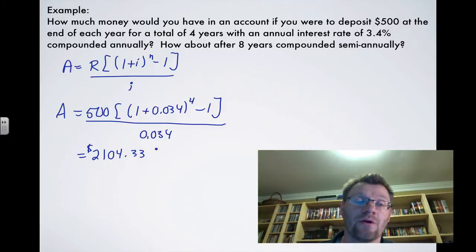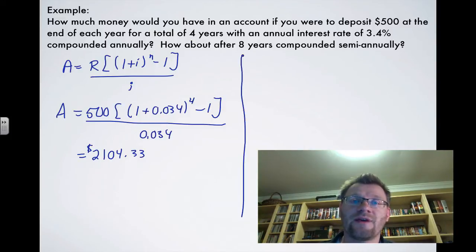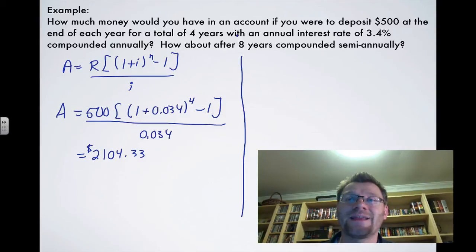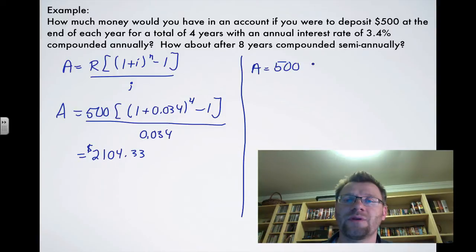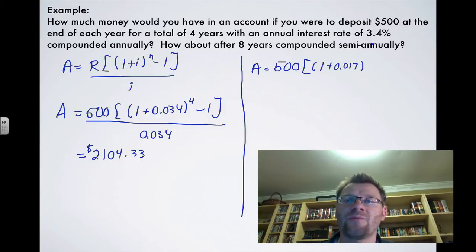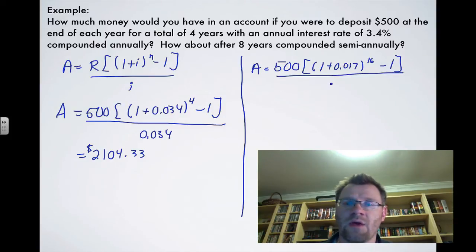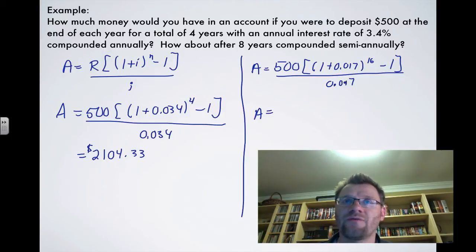The formula really shines for more complex cases. For the second part — eight years compounded semi-annually — we would have needed 16 separate calculations done the long way. Instead, we use the formula with i = 3.4% ÷ 2 = 0.017, n = 16, and divide i by 2 in the denominator as well. Calculating this gives approximately $9,105.58.